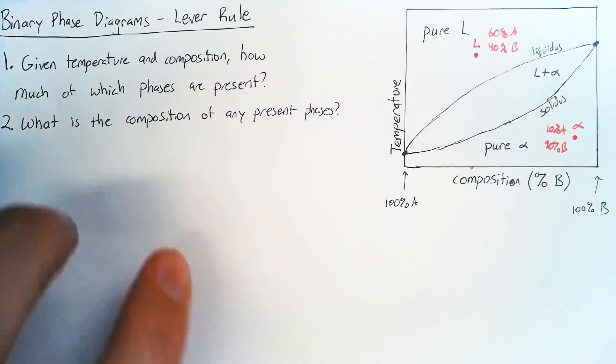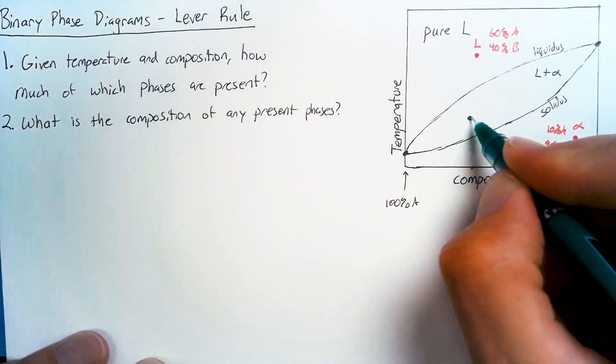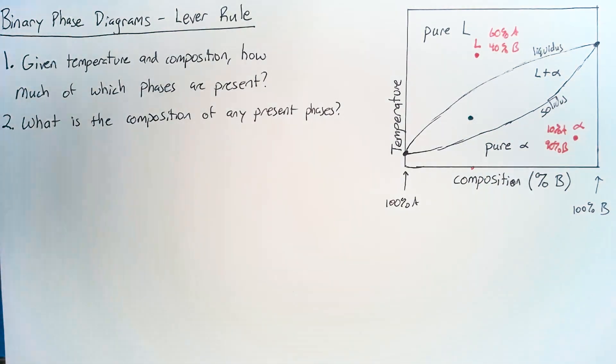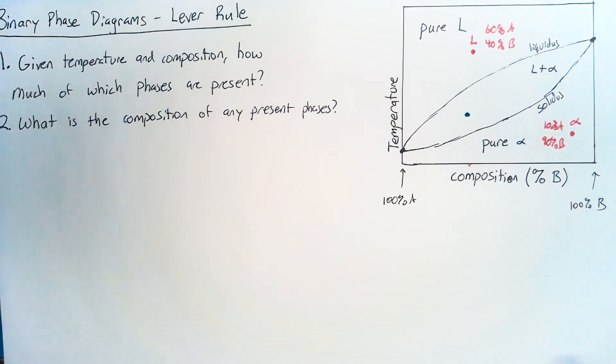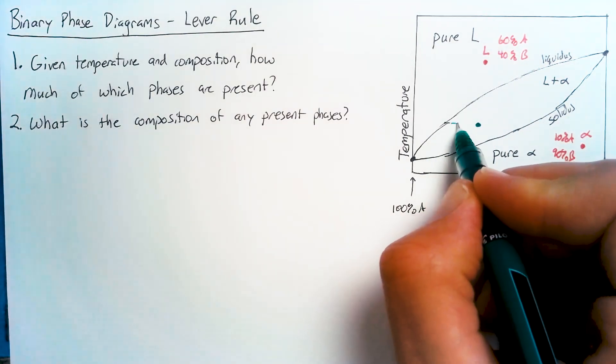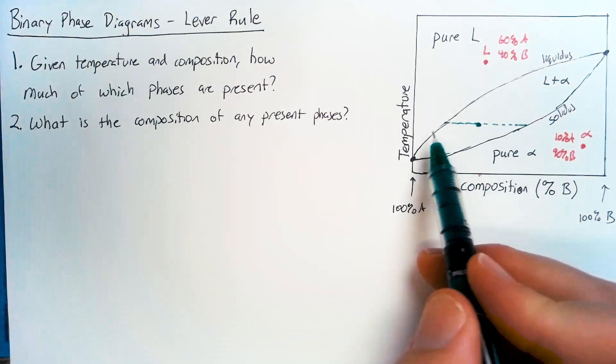Now, the fun part comes whenever we're looking at the region where we have both liquid and alpha phases. And here, we're going to start off by finding the answer to question two, because that's actually the easier in this case.